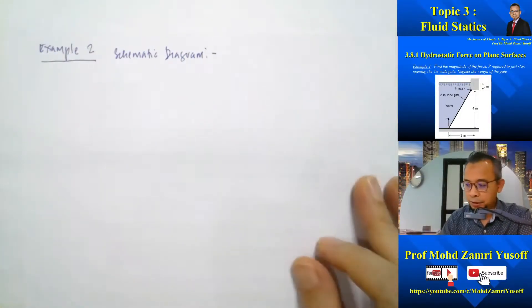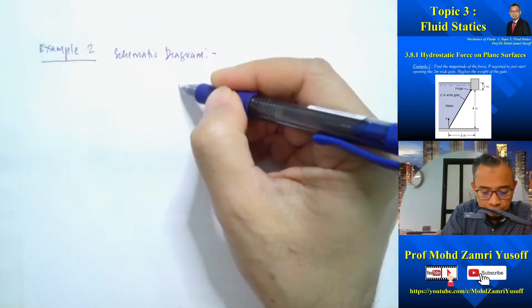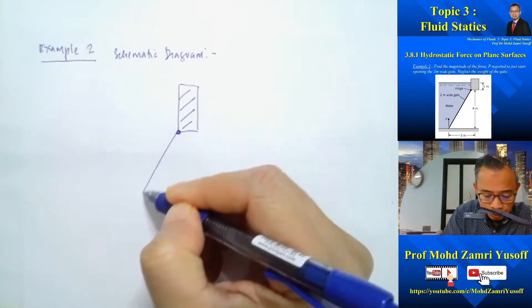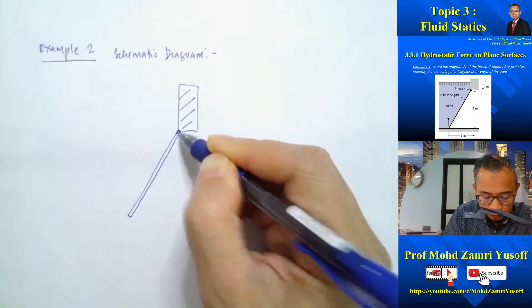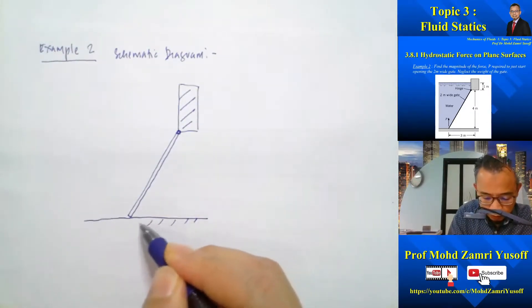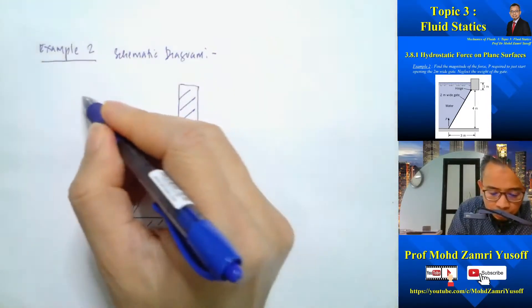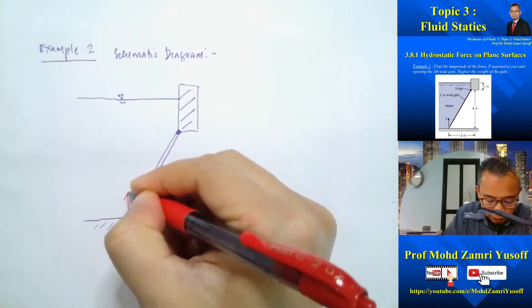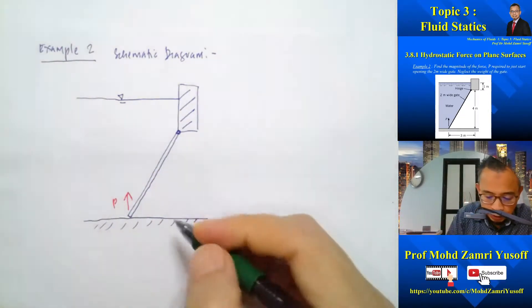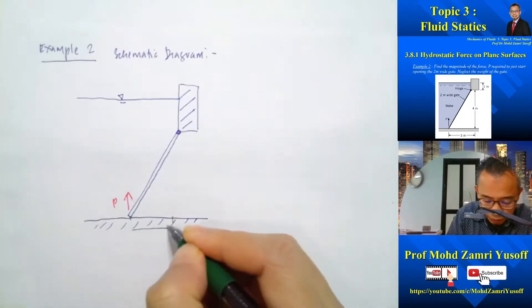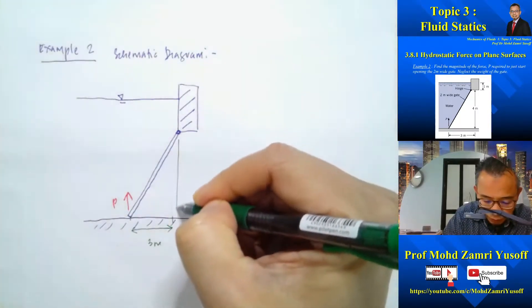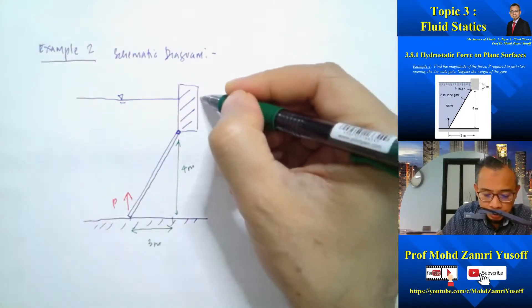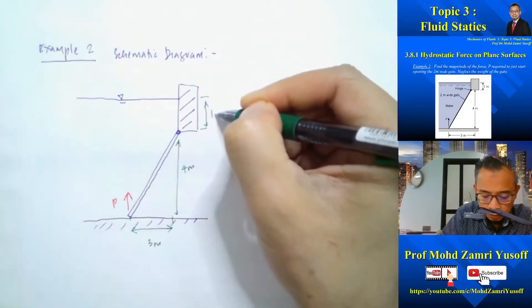Let's draw a schematic diagram. We have a concrete wall with the hinge for the gate. The bottom of the gate is shown, and the water level is marked. We apply force P at the bottom of the gate. The vertical distance from the water surface to the hinge is 3 meters, the horizontal distance is 4 meters, giving a slanted gate length of 5 meters, and the water is 1 meter above the hinge.